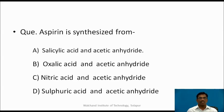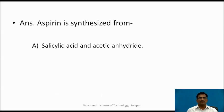Pause the video and answer the question. Aspirin is synthesized from: (a) salicylic acid and acetic anhydride, (b) oxalic acid and acetic anhydride, (c) nitric acid and acetic anhydride, or (d) sulphuric acid and acetic anhydride. The answer is (a): aspirin is synthesized from salicylic acid and acetic anhydride.